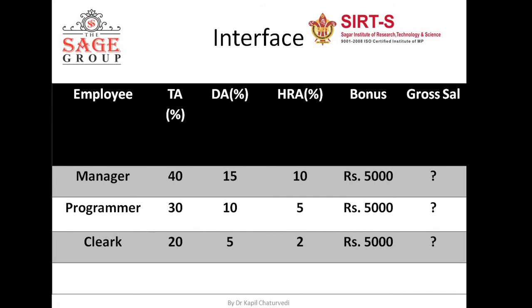We have to calculate the salary of employees — manager, programmer, and clerk. We have to calculate TA, DA, and HRA of these employees, and then calculate the total salary. In this case, we are saying that we have to implement only abstract methods; we cannot create non-abstract methods. It means we will not implement the bonus method inside that class.